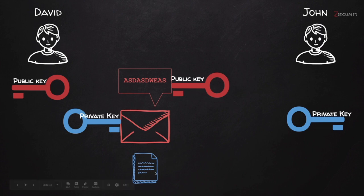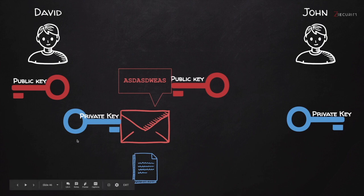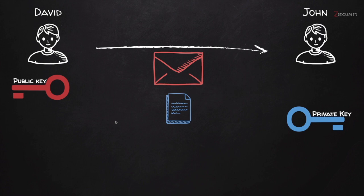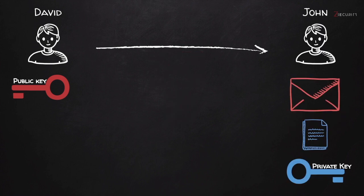Therefore, this signature can be used to verify that the message has not been modified since it was signed by David's private key. Keep in mind, David is still keeping his own private key — he did not send it through any method of communication. So now we have a message with encrypted content and a signature that corresponds to David's private key. The message is then sent using any method of communication, even an insecure one, and John receives the message along with its signature.